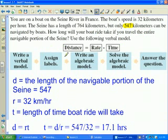So I'm going to solve for time. Distance is equal to rate times time. Solving for time, time is distance divided by rate. Distance is 547, rate is 32. Time is 17.1 hours.